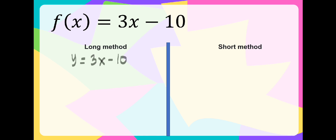Let us interchange y and x. We have here x is equal to 3y minus 10. And let us transpose negative 10 on the left side: x plus 10 is equal to 3y.